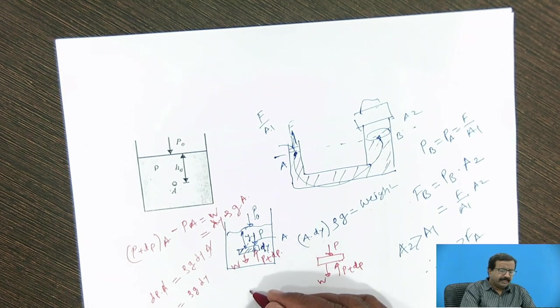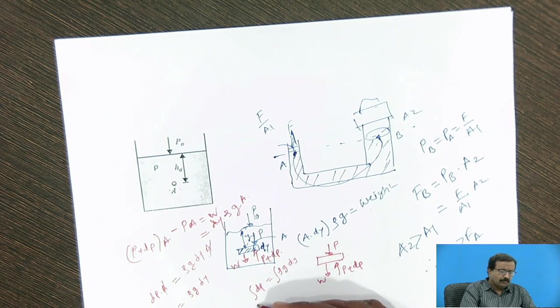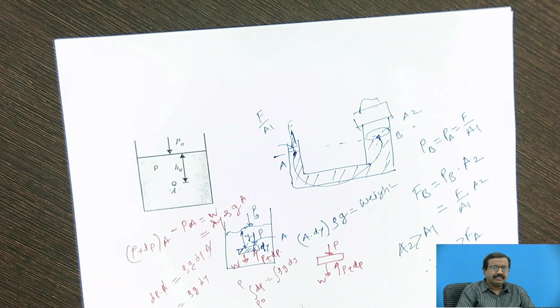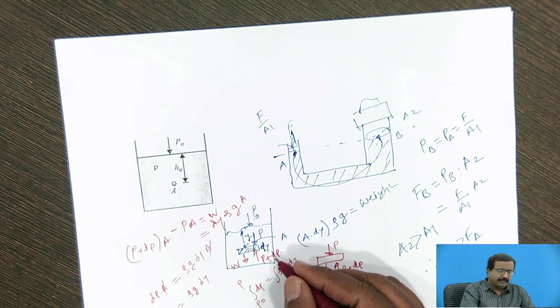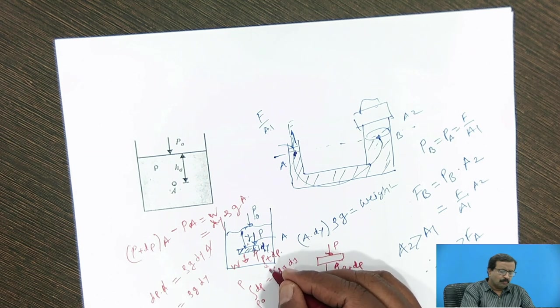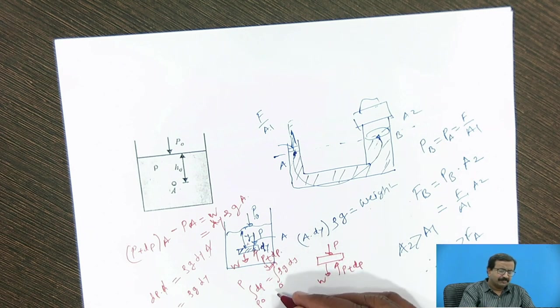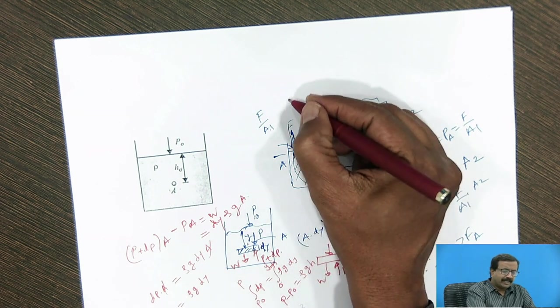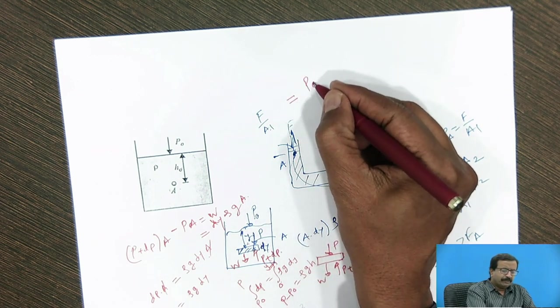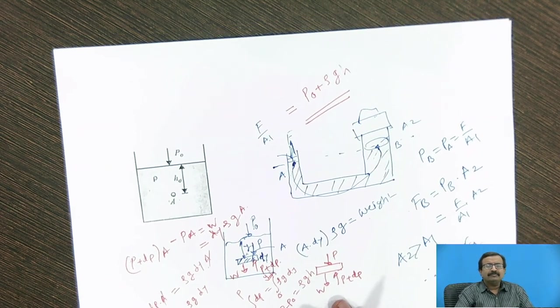Now if I integrate this, integration of dp is equal to integration of ρ g dy from p₀ to p, if I want to find out the pressure at any point, arbitrary point p, from p₀ to p, and if I integrate this from say 0 to y, 0 to y, or suppose 0 to h rather, if I call it as h, then what will happen? This will become p minus p₀ is equal to ρ g h. So finally what I get? This is equal to p₀ plus ρ g h. So this is my derivation for static pressure.